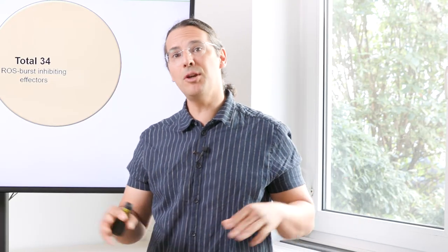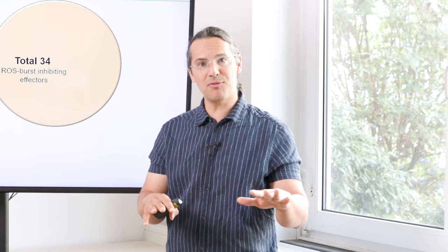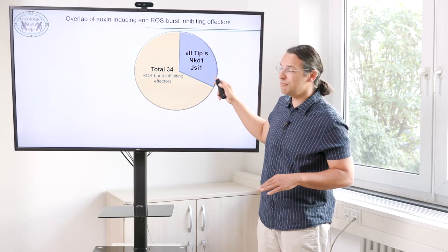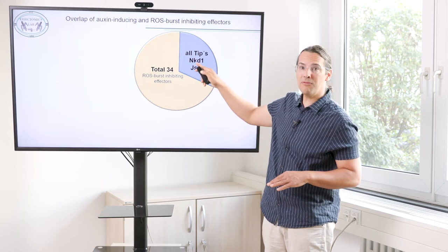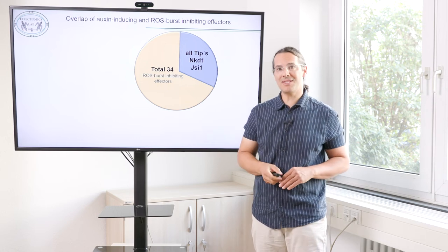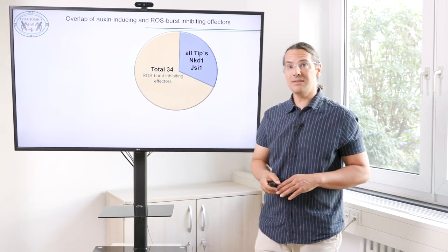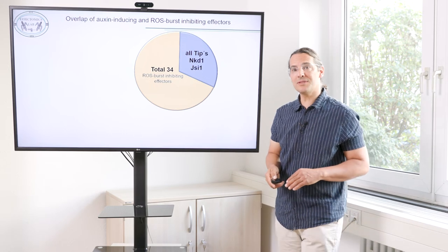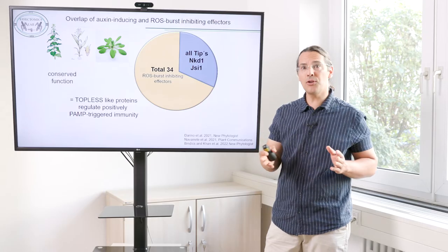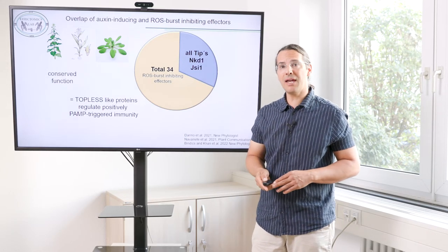The interesting finding came when we overlaid the results of the two screens — the ROS burst suppression screen and the auxin signalling induction screen. We identified that all Topless-interacting effectors, including two more recently published, are all within the group of the 34 ROS burst-suppressing effectors, indicating that Topless is a positive regulator of ROS burst control. Moreover, we could show this is valid not only for Nicotiana benthamiana but conserved from a monocot like maize to Arabidopsis to Nicotiana benthamiana — a highly conserved mechanism revealed with the help of the effectors.